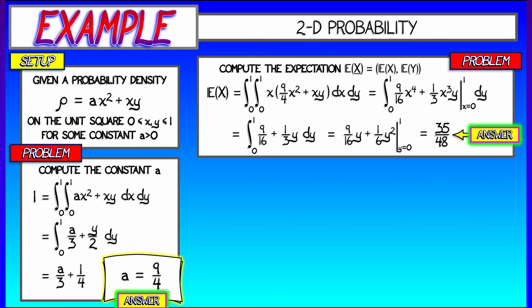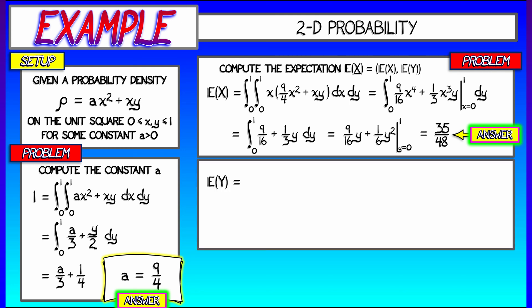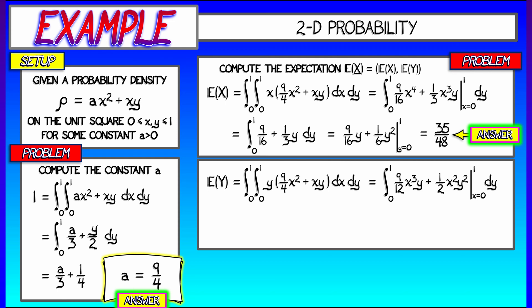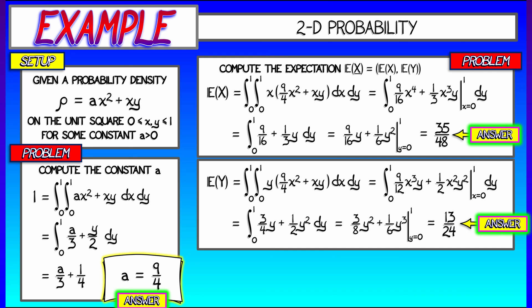A little complicated, but not so bad. We can do the same thing for the Y coordinate of the expectation, in which case we're computing the double integral of Y times the quantity 9 fourths X squared plus XY over the unit square. Integrating with respect to X first gives 9 twelfths X cubed Y plus 1 half X squared Y squared. Evaluating as X goes from 0 to 1 gives 3 fourths Y plus Y squared over 2. Integrating that with respect to Y gives 3 eighths Y squared plus Y cubed over 6, evaluated from 0 to 1, giving an answer of 13 twenty-fourths.